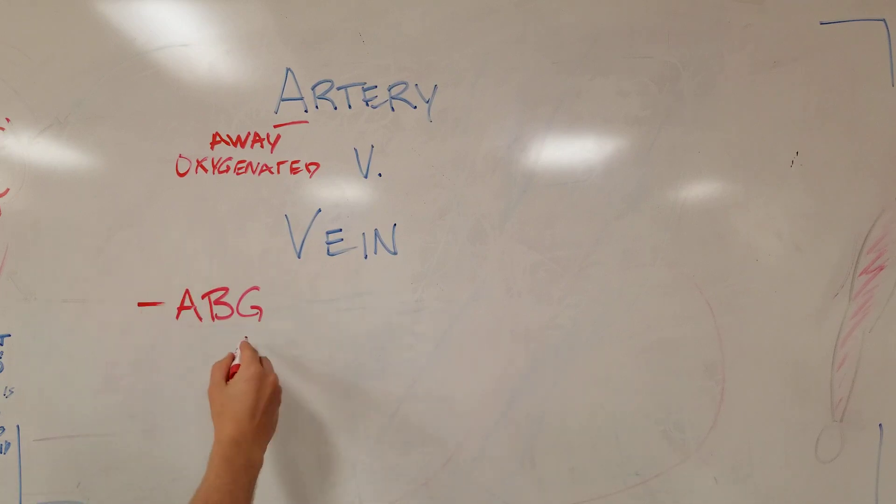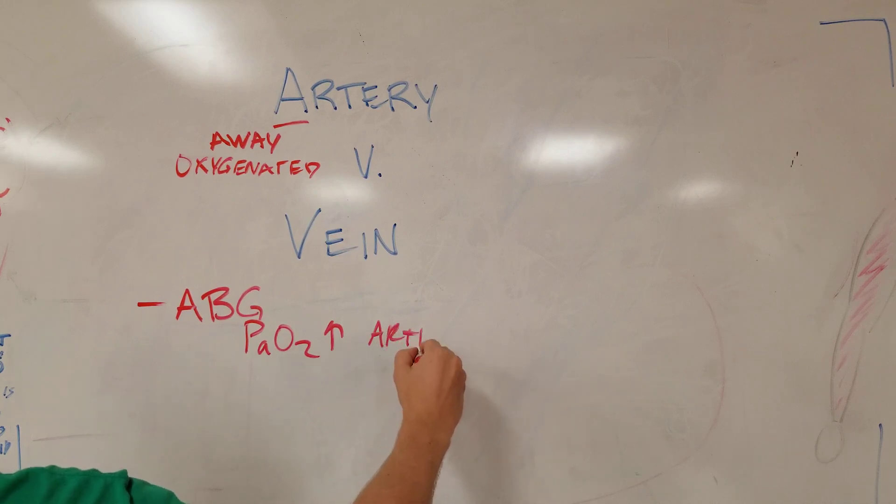If you're in an artery, you're going to have a PaO2 that's higher, like 100 would be normal, whereas if you're in a vein, it's going to be lower, like 30s or 40s.